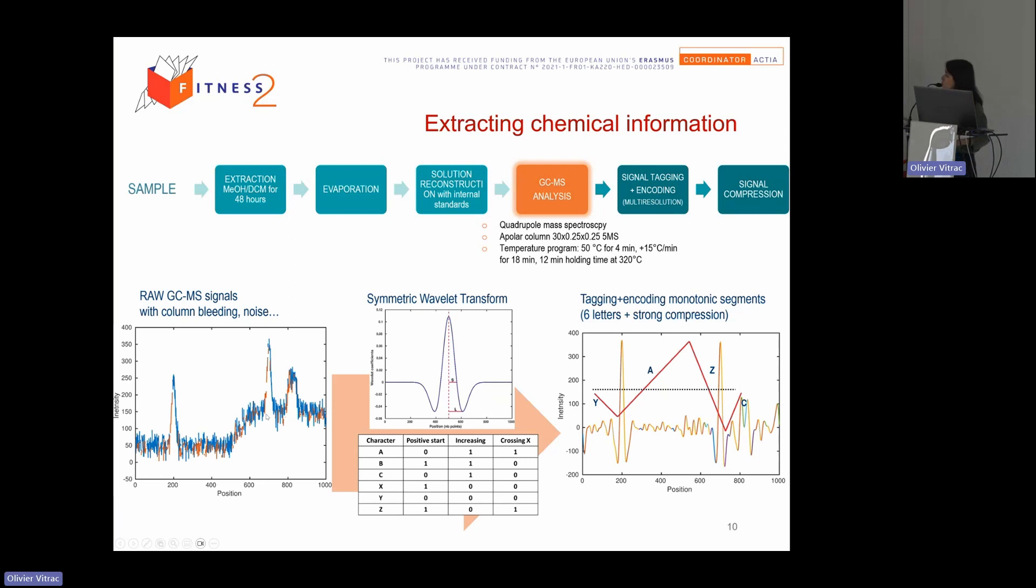So here, for example, we have the raw GC-MS signal with column bleeding, the noise. So it's not something really nice, but we see often this kind of chromatogram when we use low resolution GC-MS. The first step we apply, we transform the signal in symmetric using a wavelet transform. With this step we remove the baseline, we make them more resolutive, we can isolate the peak, we can also detect the systematic signal of the detectors. And we tag and encode the signal with six letters. So we have strong compressions and we have some signal invariable with the detectors and apparatus.